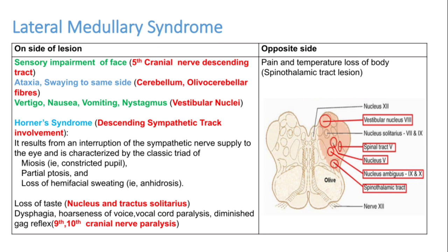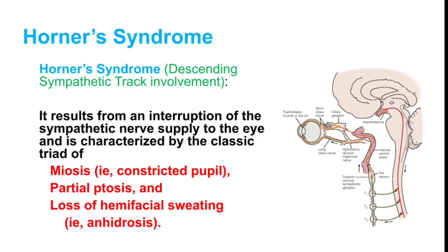The spinothalamic tract originates from skin and peripheral tissue, travels to the spinal cord, and crosses to the opposite side — which is why you get contralateral pain and temperature loss in lateral medullary syndrome. Horner's syndrome is mainly due to involvement of the descending sympathetic tract, with constricted pupil, partial ptosis, and loss of hemifacial sweating (anhydrosis). It is a classical finding in lateral medullary syndrome.